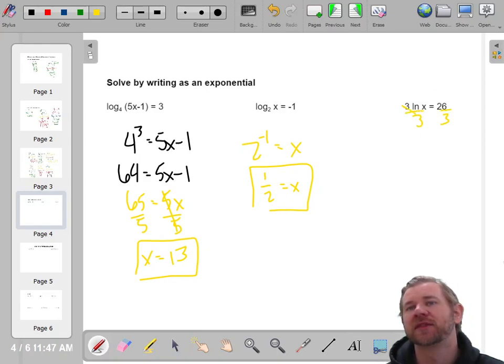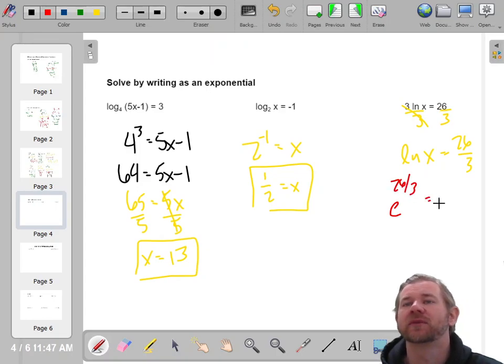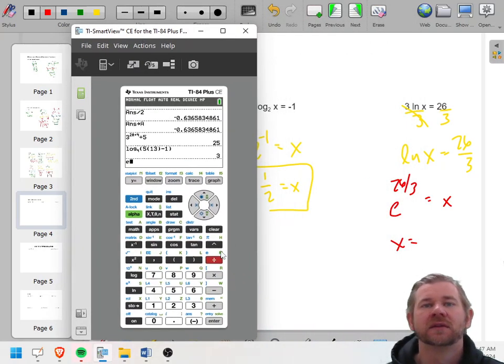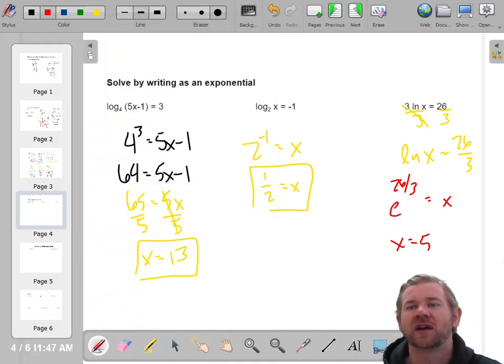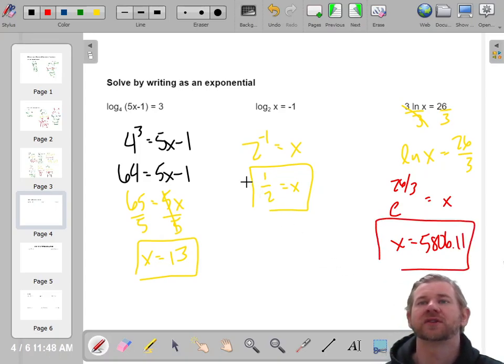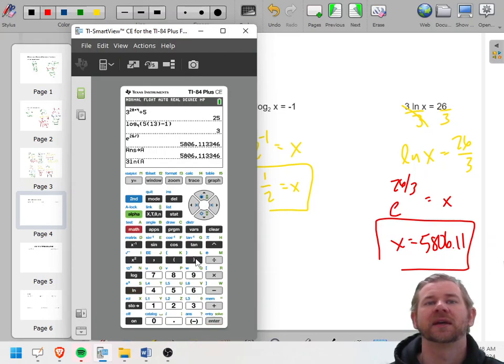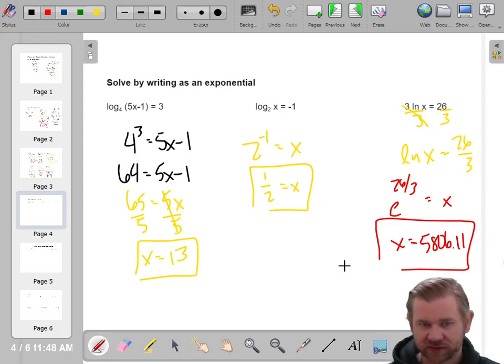Now before you rewrite this one, you want to divide both sides by 3. So the natural log of x, I'll just leave that as 26 over 3. And now it's a natural log, so that's base e. E to the 26 over 3 equals x. That's pretty awful. But there is an e button on here. E to the power of 26 divided by 3. 5806.11. I'll check that one as well. Store as a. 3 natural log a. Is it 26? Yup. So I know I did it right.